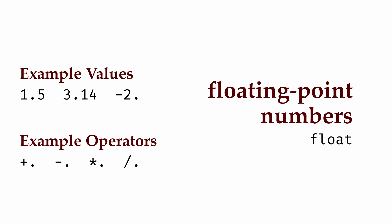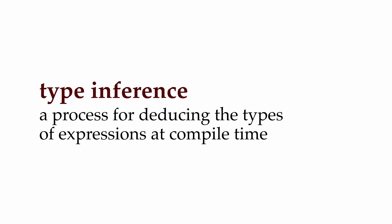Having separate operators for integers and floating point numbers takes some getting used to, especially if you're used to a language that doesn't have this distinction. But we'll soon see the value of a strong type system that prevents us from using values in inappropriate ways. In general, OCaml can, via a process known as type inference, automatically determine the types of expressions without us needing to explicitly say what the type of each expression is.